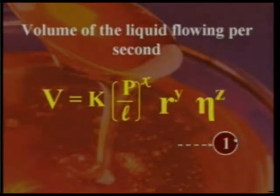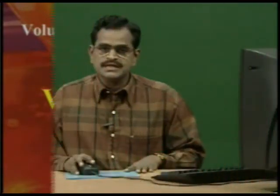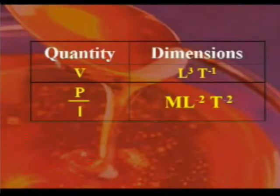Rewrite this equation as V equal to K into (P by l) whole power x, r power y, eta power z. Name this equation as 1. Now substitute the values of dimensions for each quantity in this equation.